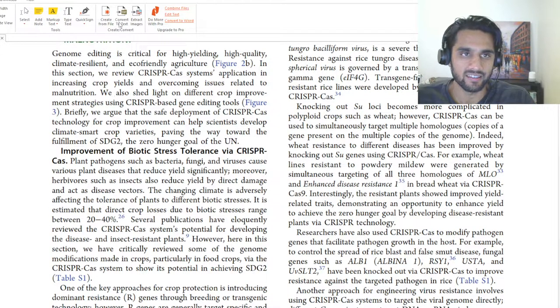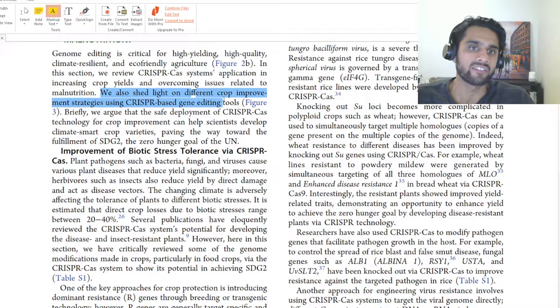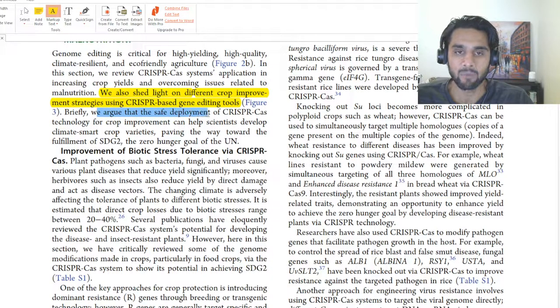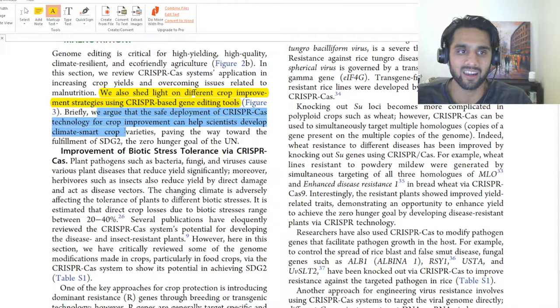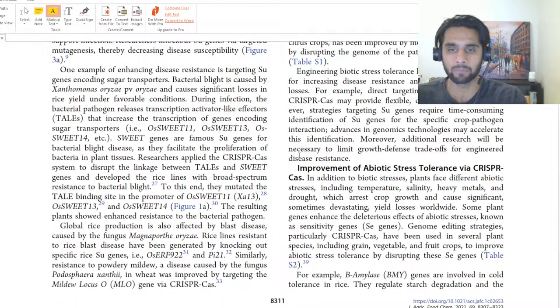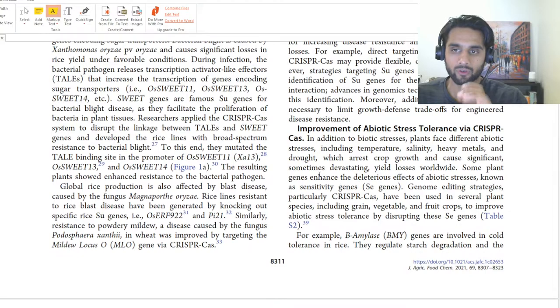They basically came up with this paper here, and the most important part I want to talk about in this video is this line here. Let's see if I can highlight this. We also shed light on different crop improvement strategies using CRISPR-based gene editing tools. We argue that safe deployment of CRISPR-Cas technology for crop improvement can help scientists to develop climate-smart crop varieties, paving the way towards fulfillment of SDG to the zero hunger goal of UN.